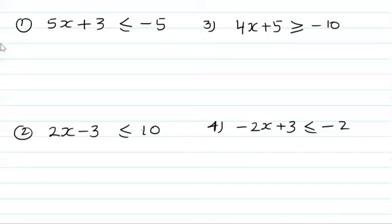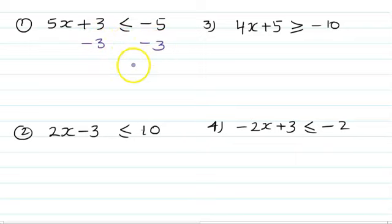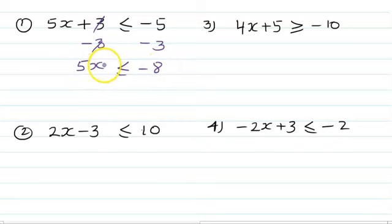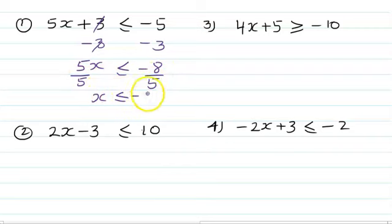Check your work against the solution. Practice question 1: 5x plus 3 less than or equal to 5. First step: minus 3 both sides — 3 cancels, leaving 5 minus 3 equals 2... wait, minus 5 minus 3 is minus 8. So we have 5x less than or equal to minus 8. Next step: divide by 5. You get x less than or equal to minus 8 over 5. If you want, you can convert to decimal.